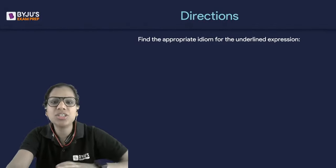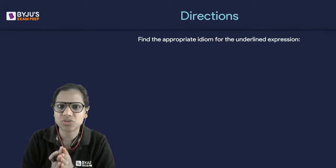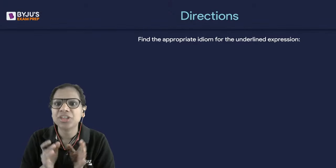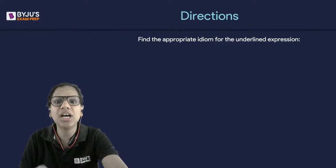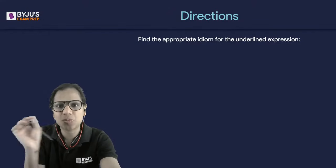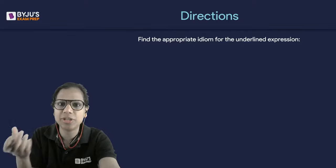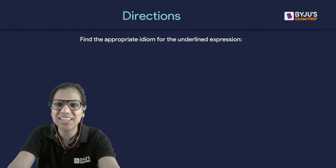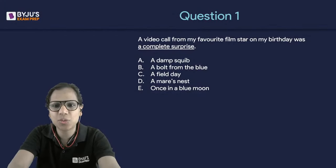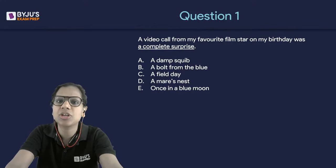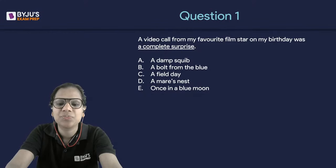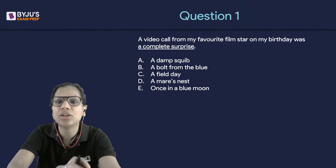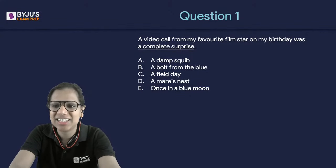The directions for the first five questions coming on your screen are these: you have to find the appropriate idiom for the underlined expression. In a sentence, one phrase will be underlined and you have to find the appropriate idiom matching that phrase — one that fits in the situation. For every question, I'm going to give you five options because some exams such as XAT, NMAT, and MHCET give you five options. So keeping that in mind, we also have five options today.